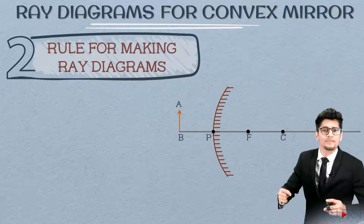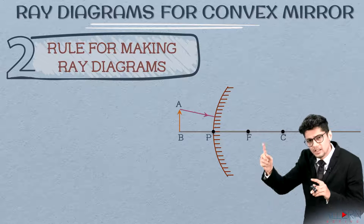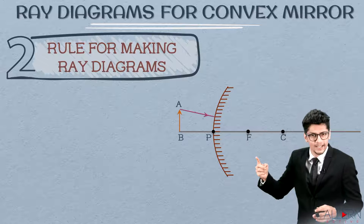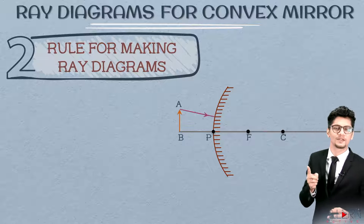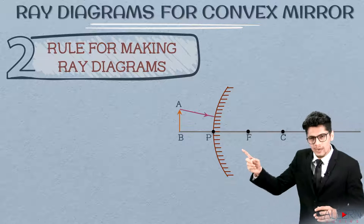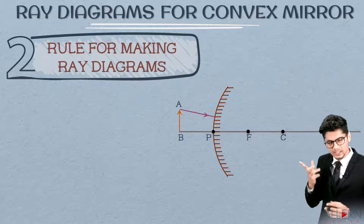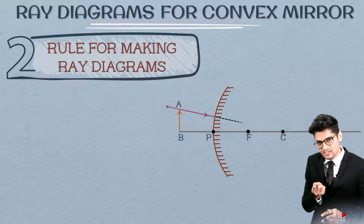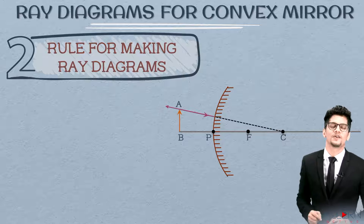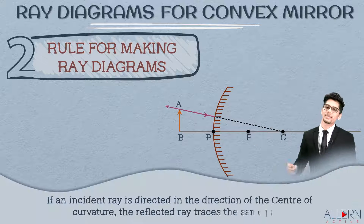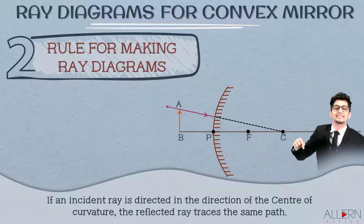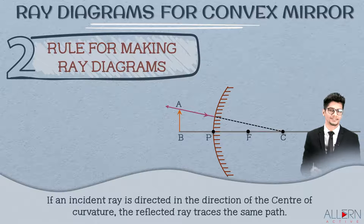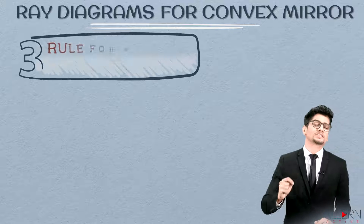For the second rule, when we try to pass the ray of light through the center of curvature, the mirror comes in between. So we direct this ray of light in the direction of the center of curvature. This ray will reflect back in the same direction, and you draw a dotted line till the center of curvature. If an incident ray is directed toward the center of curvature, the reflected ray traces the same path.